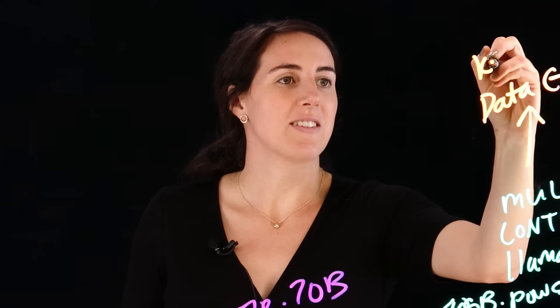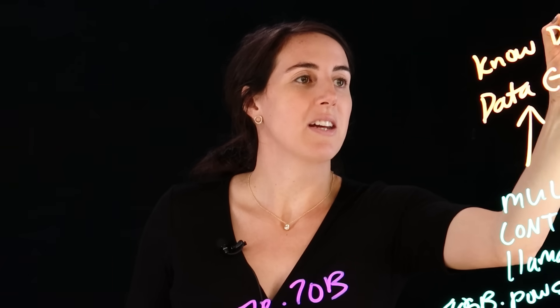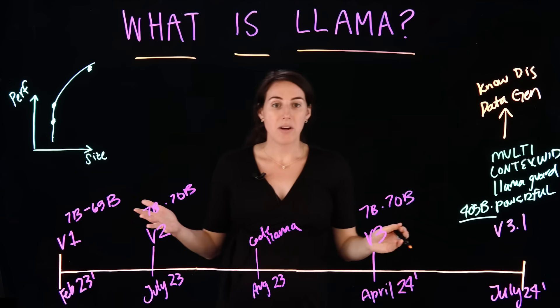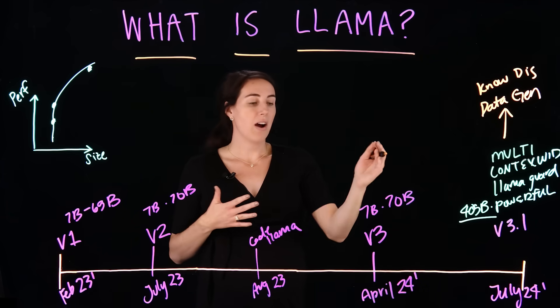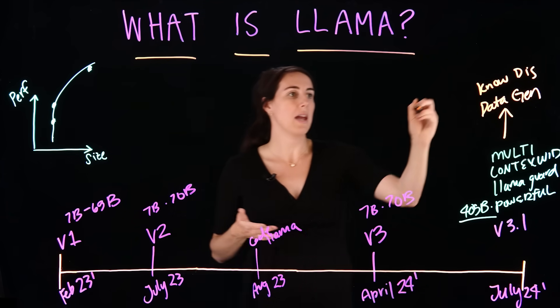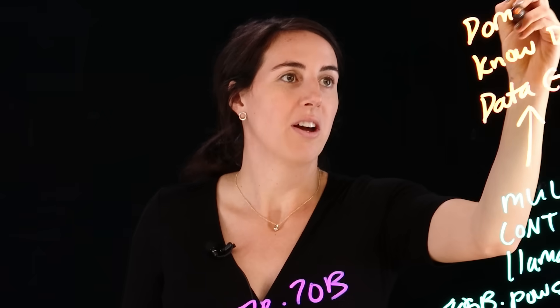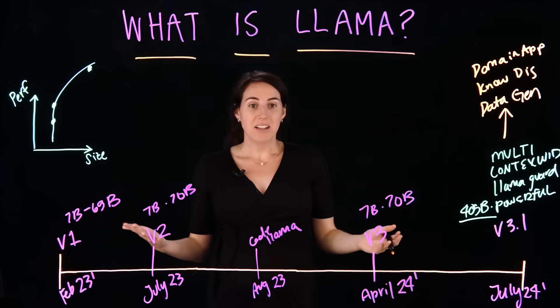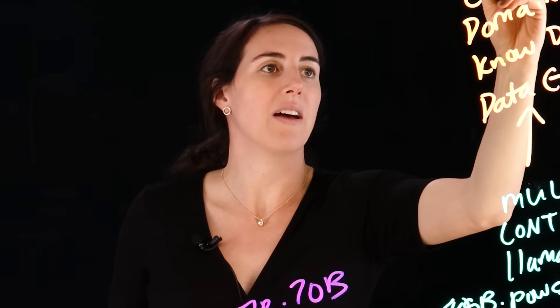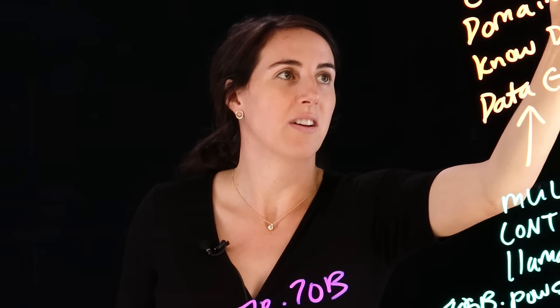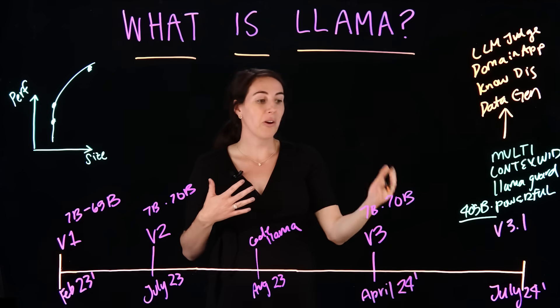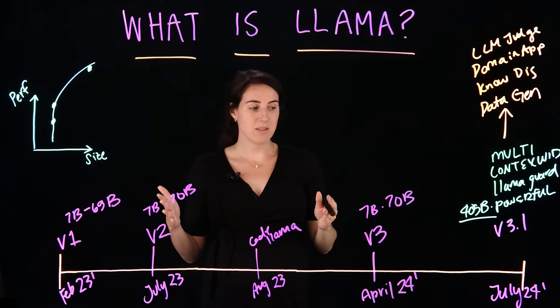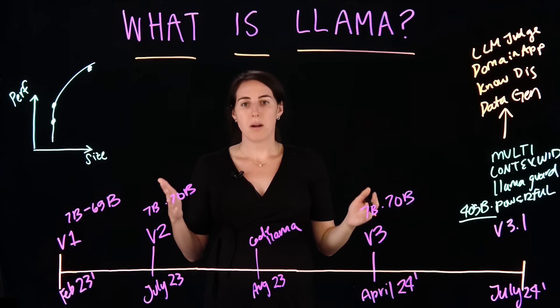Next, we have knowledge distillation. So, we can take that model and break it down and also find more specific domain applicable use cases. And then, finally, we can use the model as an LLM judge. So, we can look at several different LLMs and use Llama to evaluate which model is best for our given use case.